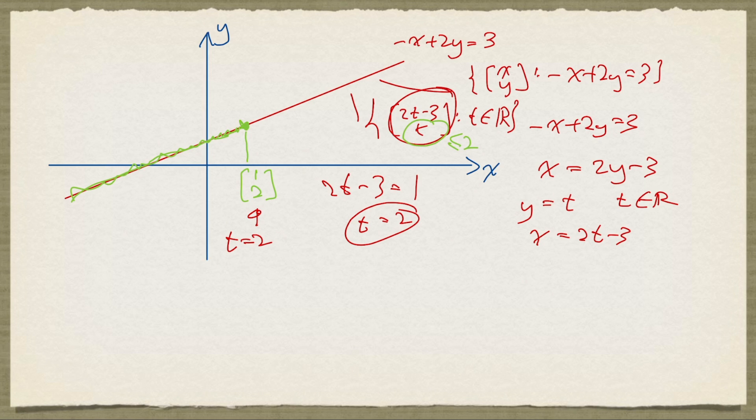Therefore, we can say that the green portion of this line is a set of points (2t minus 3) in the x-coordinate, t in the y-coordinate, such that t is at most 2.